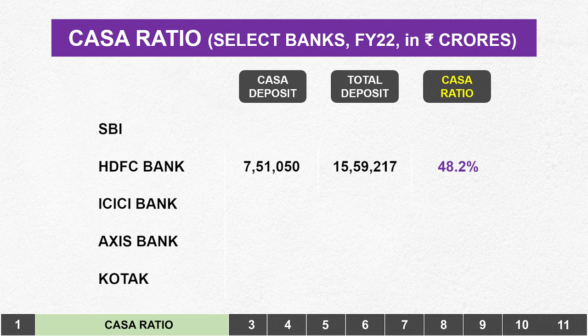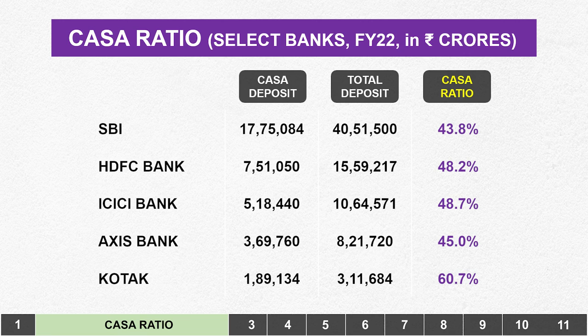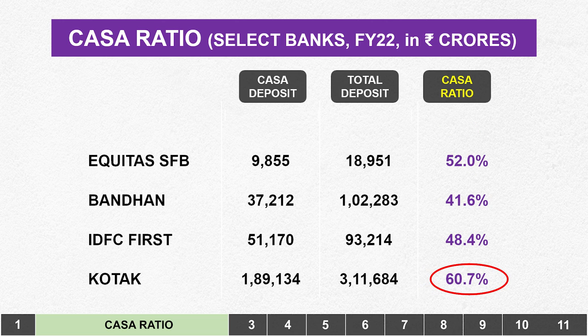Of that deposit base, about 7.5 lakh crores were in Current and Savings Accounts, putting HDFC Bank's CASA ratio at 48.2%. Other prominent banks are also within the 42-48% range, with the notable exception of Kotak Mahindra Bank, which is at a CASA of 60%. But a number like 60% need not imply that Kotak's book is better. Banks like Equitas, Bandhan, and IDFC First have been enticing depositors with high interest rates on savings accounts — a strategy that may be building their deposit book faster, and their CASA is also high, but there are still two problems.